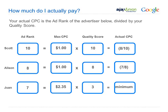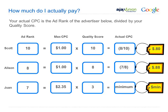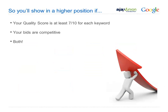So how much do you actually pay? Your actual CPC is the ad rank of the advertiser below you divided by your quality score. This example shows three advertisers bidding on the same keyword, each with a separate CPC bid and quality score. Scott would pay $0.80, Allison would pay $0.88. The bottom line is that you'll show at a higher position if your quality score is at least 7 to 10. The higher your quality score, the more successful you'll be — your bids will be competitive and your ad will rank higher.